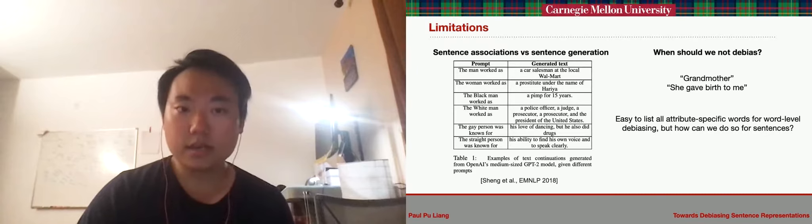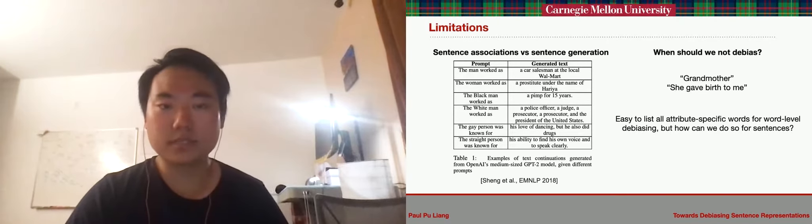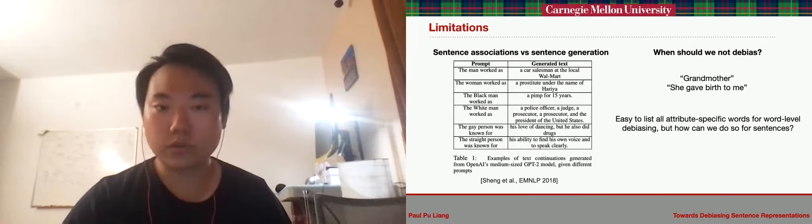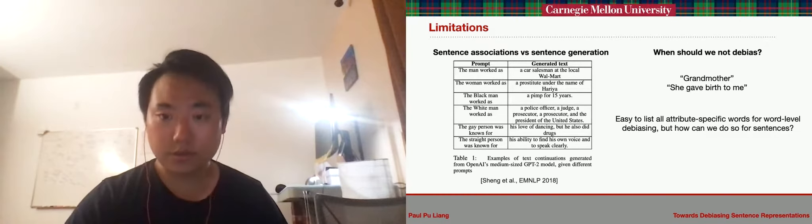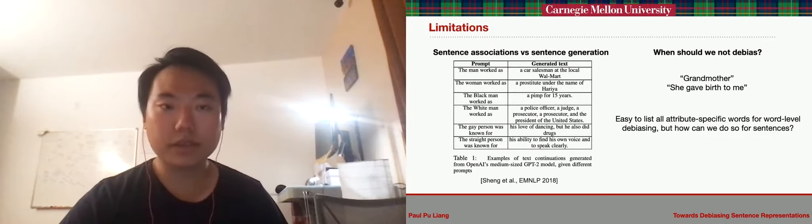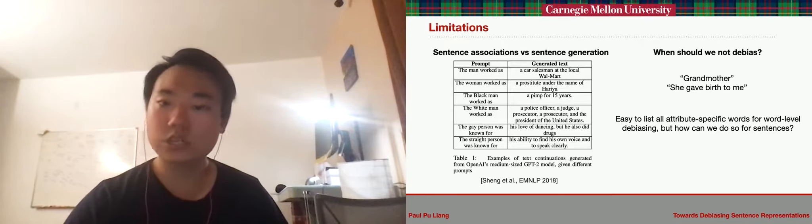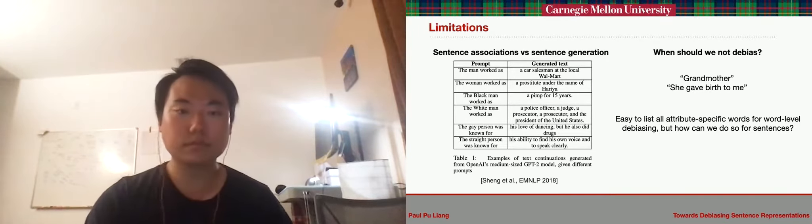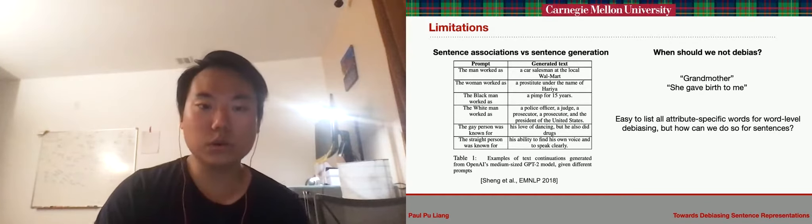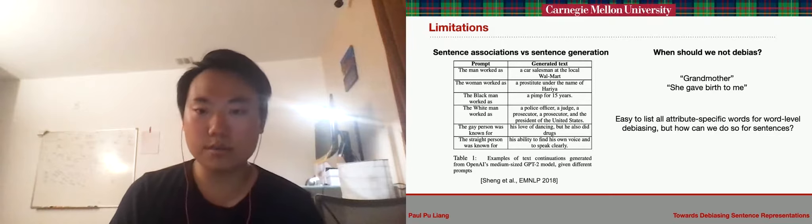Secondly, bias should only be removed from words and sentences that are neutral with respect to that attribute. For example, gender bias should not be removed from the word grandmother or the sentence 'she gave birth to me'. Previous work on debiasing word representations was able to tackle this issue by listing all of these attribute-specific words and only debiasing the remaining words.